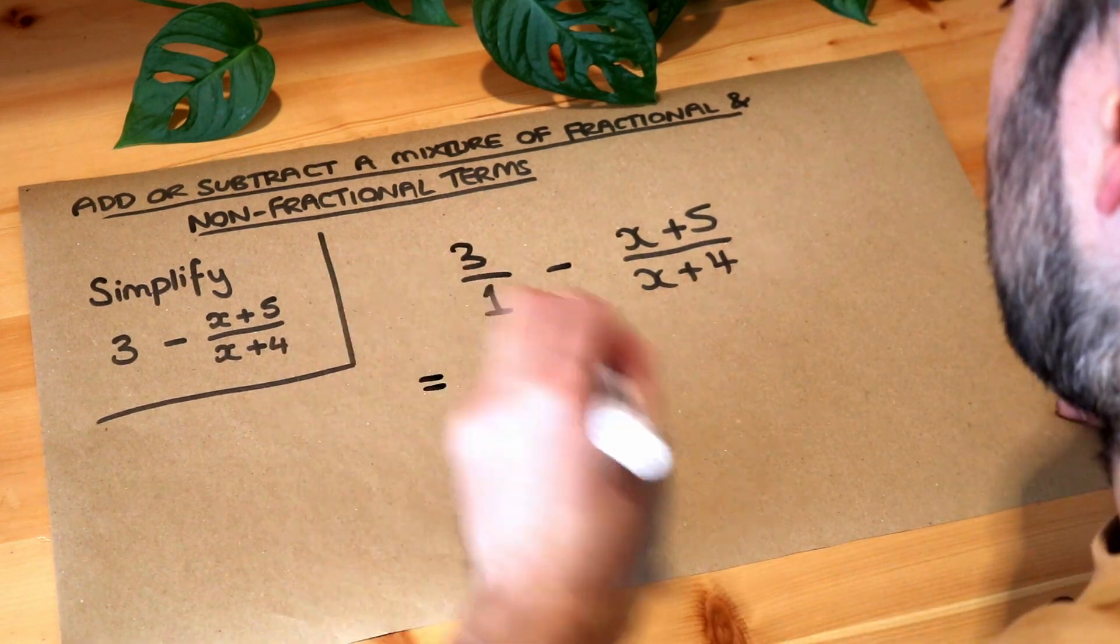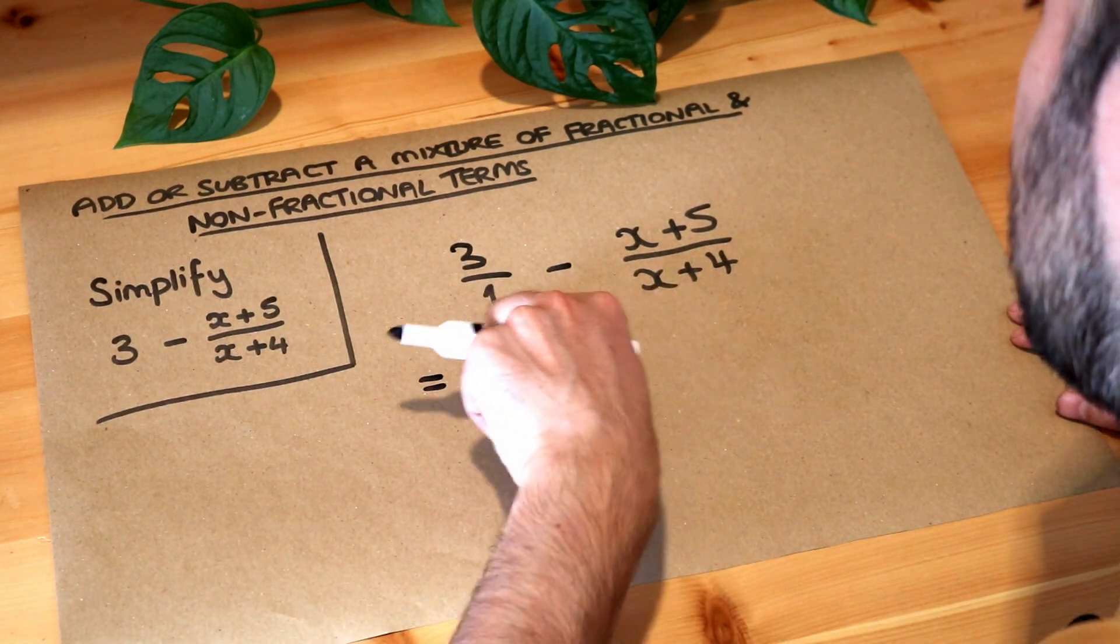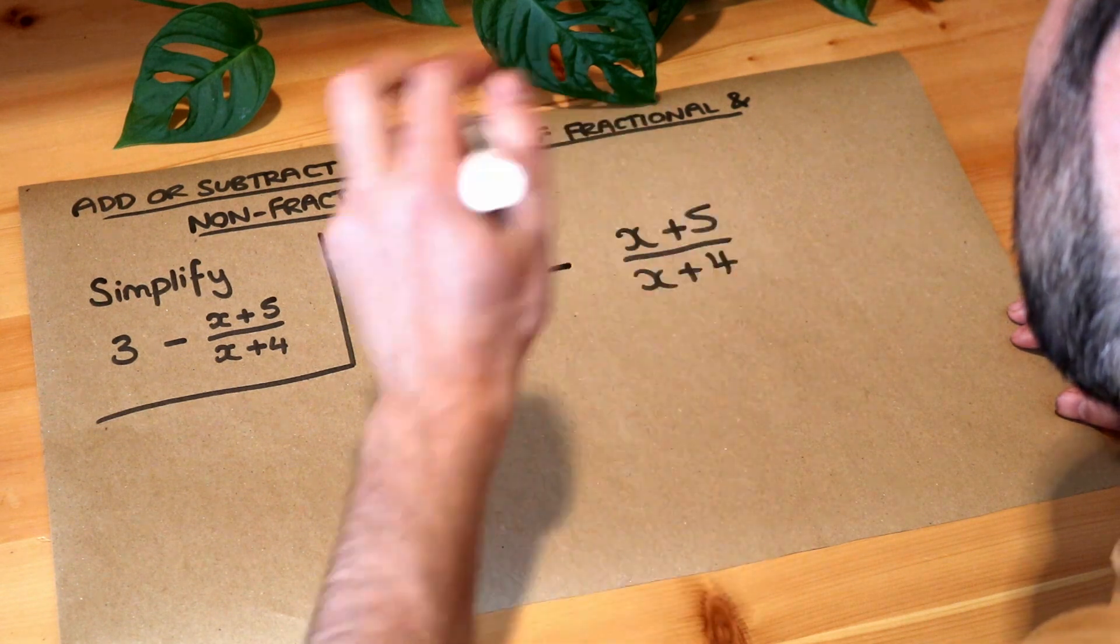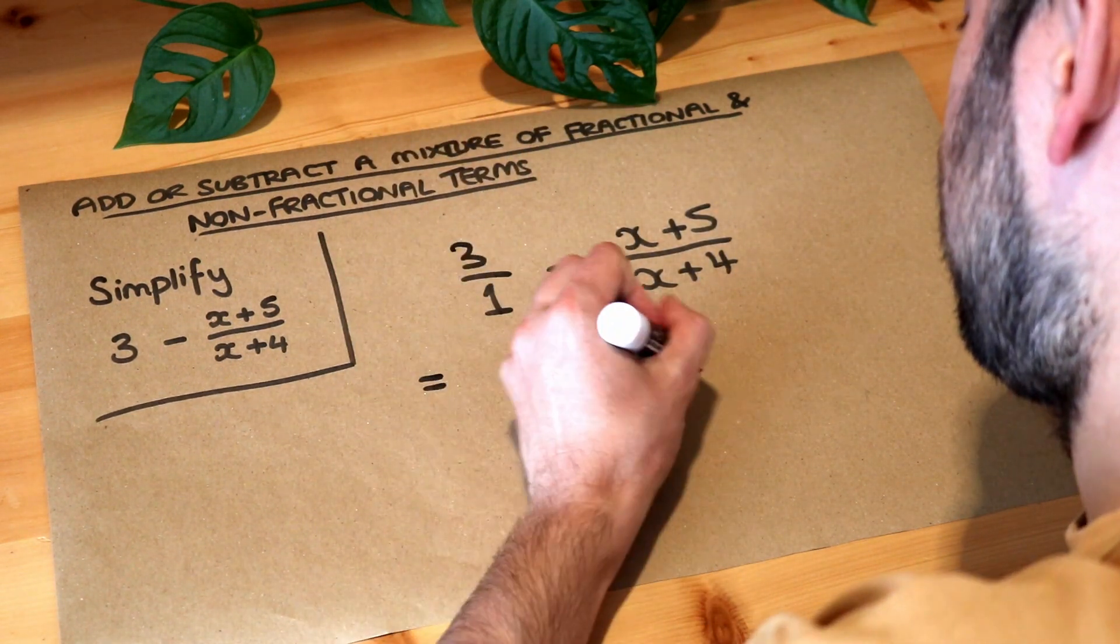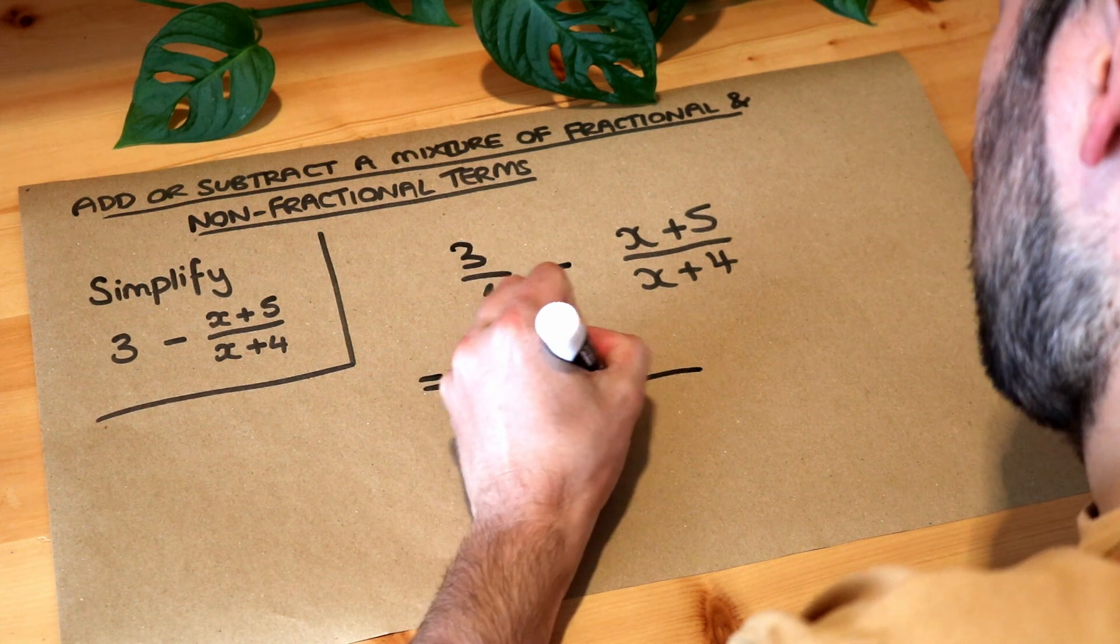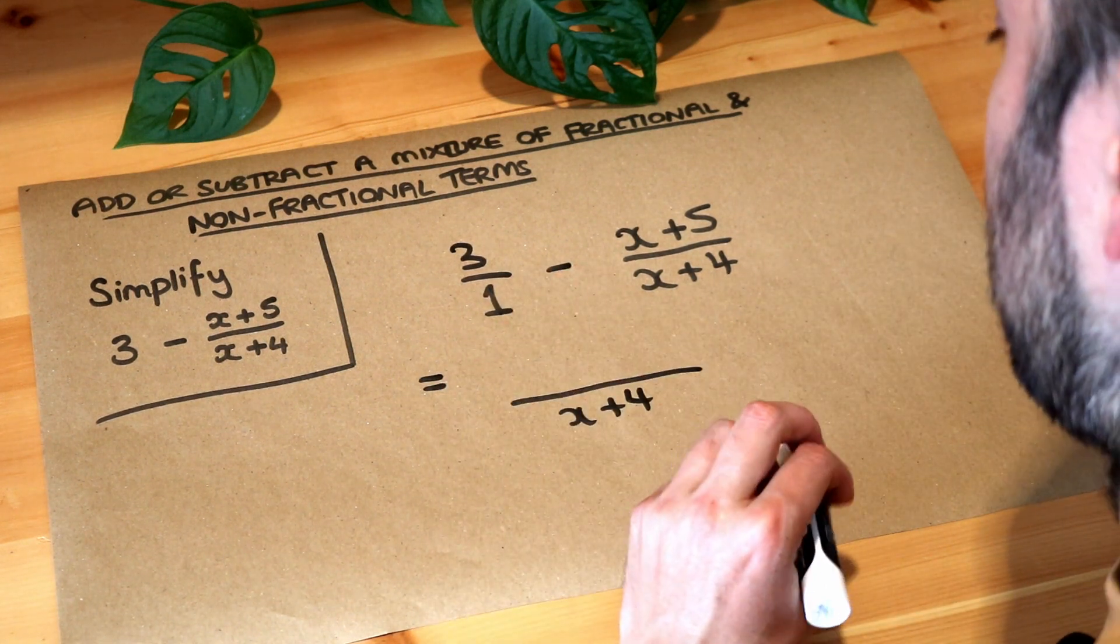Now the quick way of doing this is that you could multiply the denominators. So one times x plus four is just x plus four. And then you cross multiply the numerators.